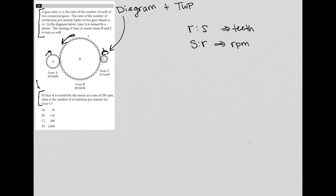Going down here, if gear A is rotated by the motor at a rate of 100 RPM. So now we're getting some more information. Let's just write down what we know about each of these gears. So gear A has 100 RPM, and we also know that it has 20 teeth.